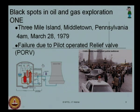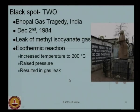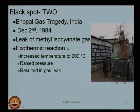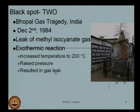This is a sad picture after the disaster has occurred. Black spot number two unfortunately happened in India. This is famously known as the Bhopal disaster. It happened on 2nd of December 1984. Mainly, it was due to the leakage of methyl isocyanate gas. It is an exothermic reaction responsible for this disaster. The temperature was increased to 200 degrees Celsius and the pressure was raised, as a result of which the gas leaked.